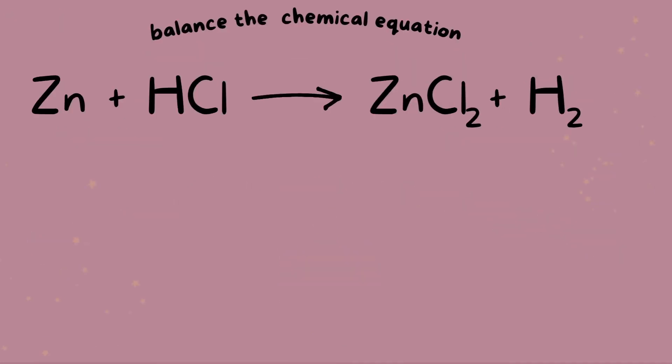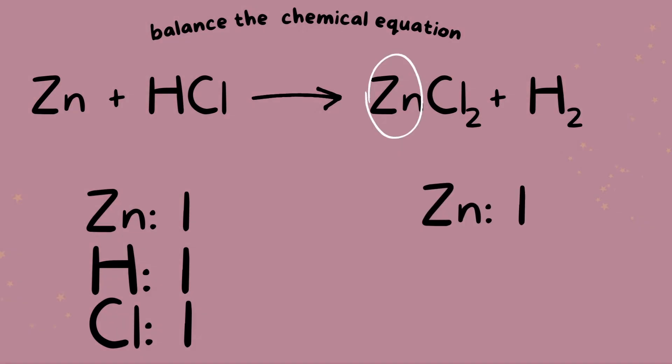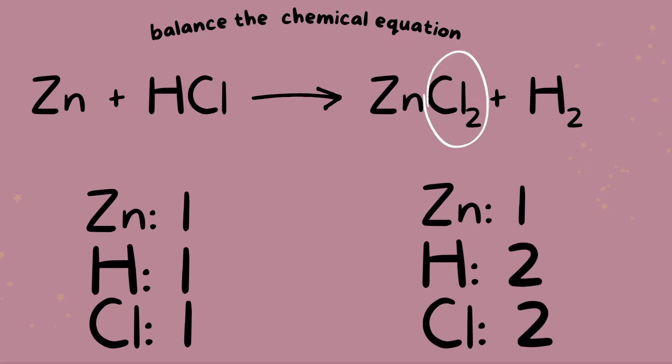Starting with zinc, it looks like we have one zinc atom. We know this because the number in front of each element or molecule indicates how many atoms it has. No number means the element or compound has one atom. So we have one zinc atom here, one hydrogen atom and one chlorine atom. On the product side, we have one zinc atom, we have two hydrogen atoms indicated by this number two subscript, and we have two chlorine indicated by this number two subscript that is attached to it.